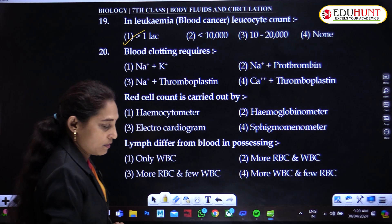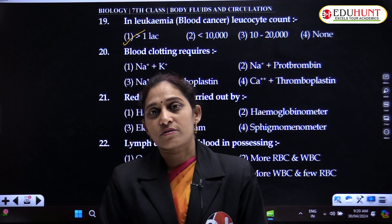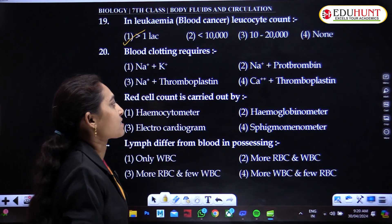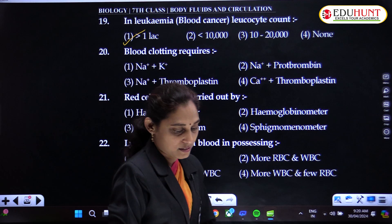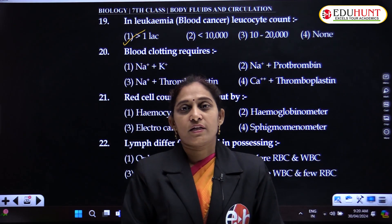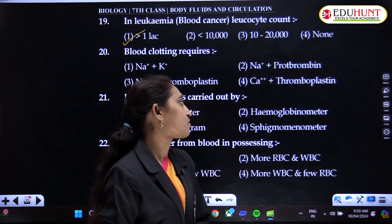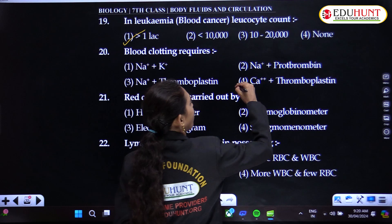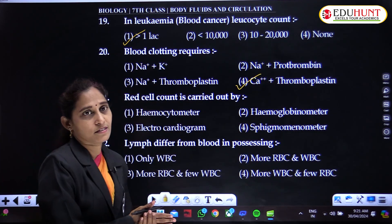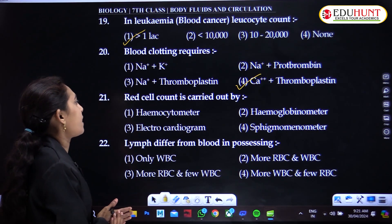Blood clotting requires calcium ions — not sodium — and also thromboplastin, also called thrombokinase, which activates prothrombin into thrombin. So calcium and thromboplastin are the blood clotting factors required for blood clotting.